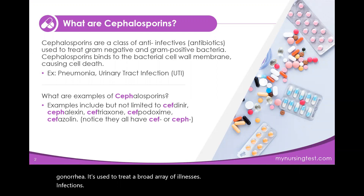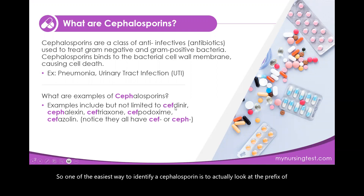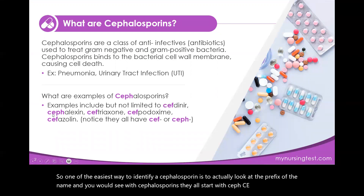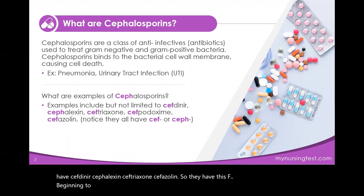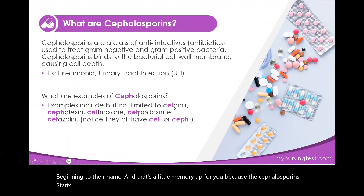One of the easiest ways to identify a cephalosporin is to look at the prefix of the name. You would see that cephalosporins all start with 'ceph' — C-E-P-H — or 'cef' — C-E-F. So you have cefdinir, cephalexin, ceftriaxone, cefazolin. They all have the 'ceph' beginning to their name, and that's a little memory tip for you.